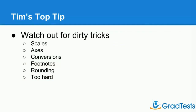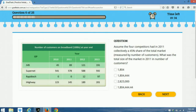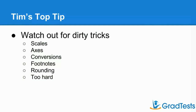My top tip here is to watch out for what I call the dirty tricks — things the test providers might use to make you choose the wrong option. You're going to have to look out for things such as scales changing. In this example, the scale of the table is in thousands, but the answer is not in thousands, so you need to do a conversion between two scales. You might also come across graphs with changing or confusing axes, maybe with X and Y swapped, or you might have to make conversions from milliliters to liters or from euros to pounds.